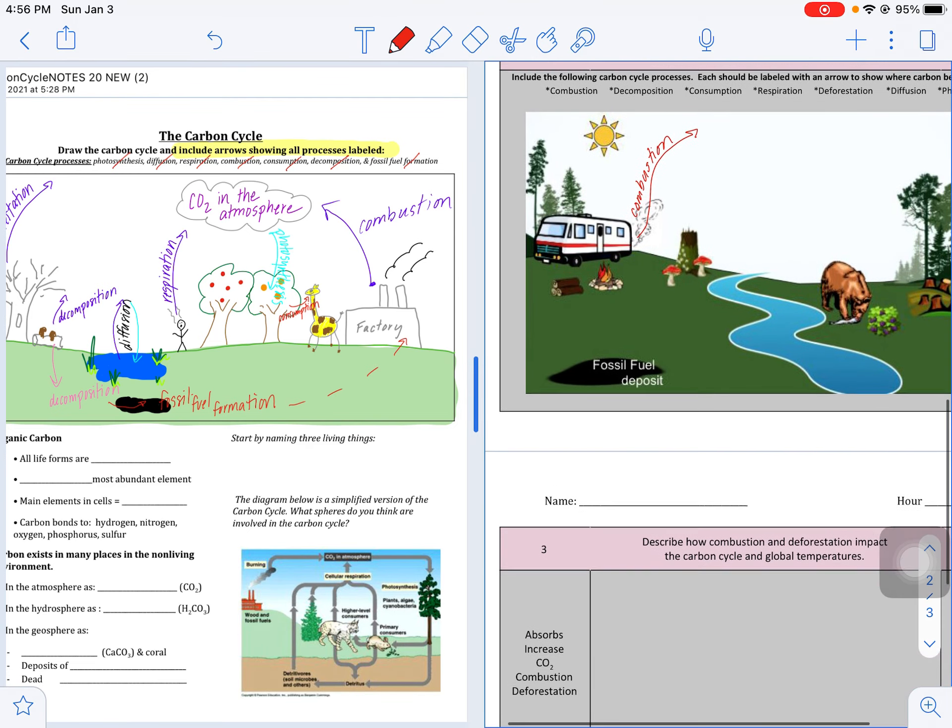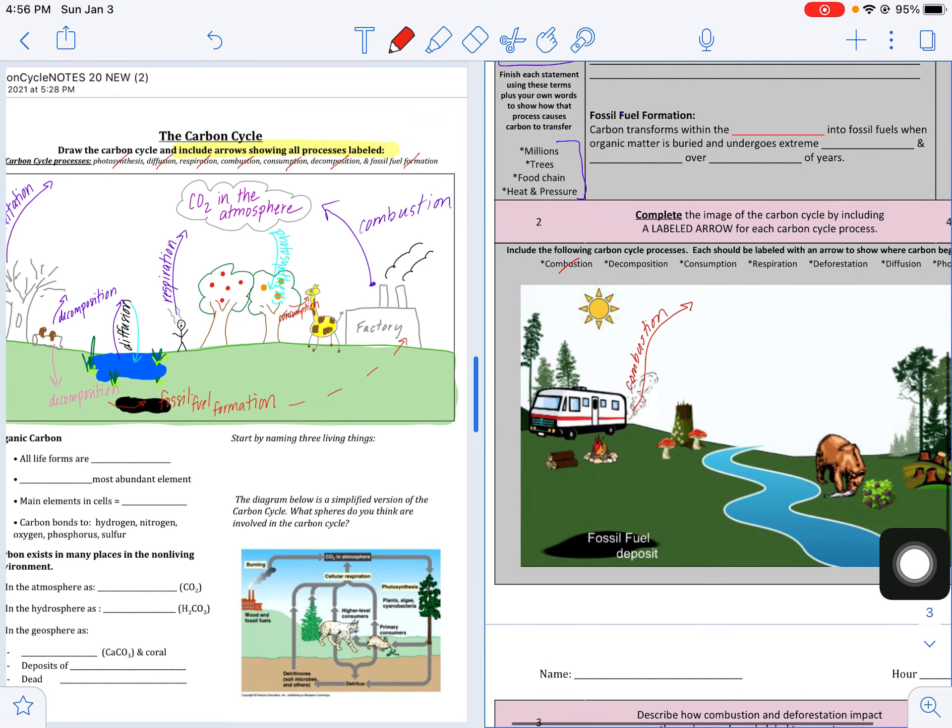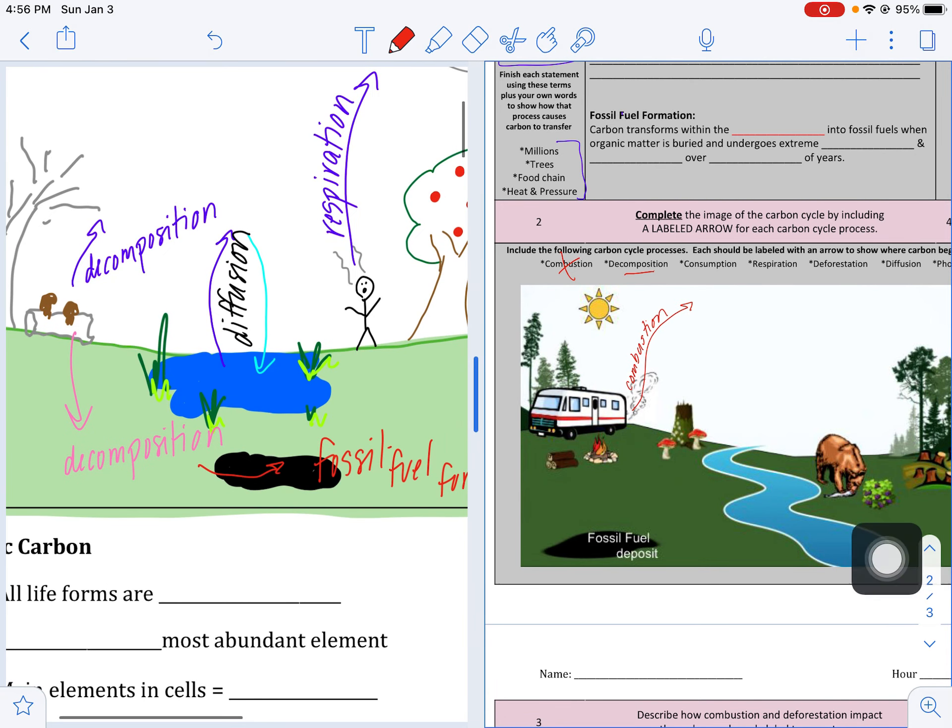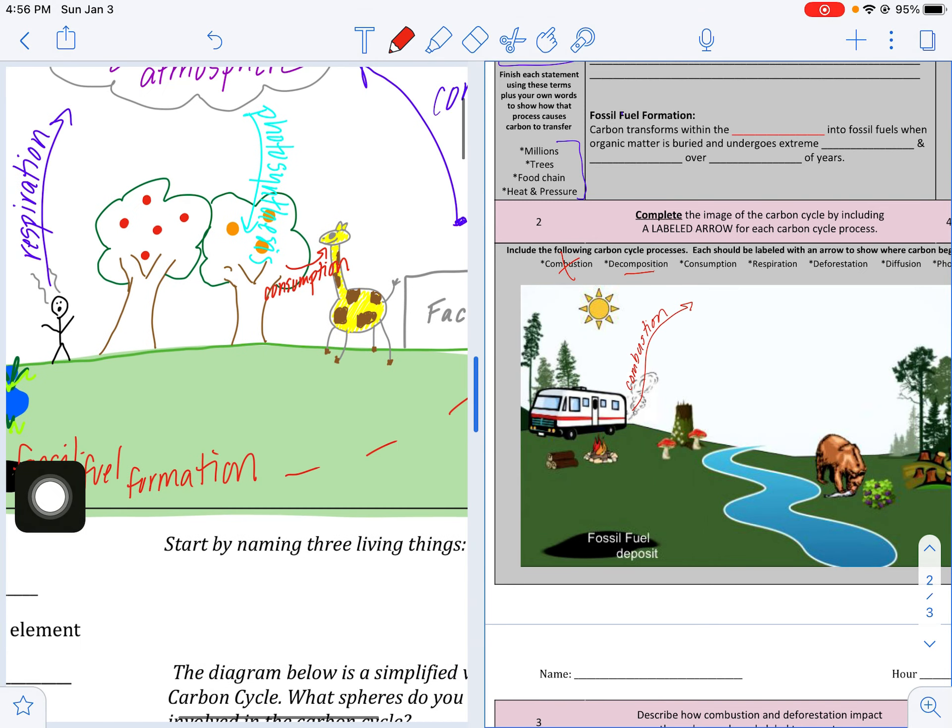Right, and then we can cross that one off the list. Decomposition, remember, is when we have decaying plant or animal materials, and remember that's going two ways, so we have decomposition to the atmosphere but also into the ground. So you should have plenty of room to get both of those on there. Consumption, we're looking for food chain, animals eating plants or other animals.